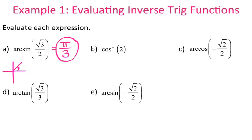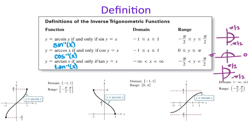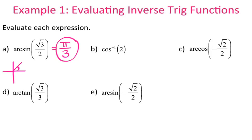For inverse cosine of 2: I'm trying to find what angle, when I take cosine of it, gives me a value of 2. But the domain of inverse sine and cosine has to be between negative 1 and 1, so my inputs have to be between negative 1 and 1. That means the inverse cosine of 2 does not exist. If you were to try to put that in the calculator, inverse cosine of 2 would give you an error.